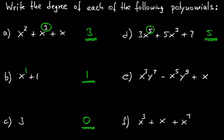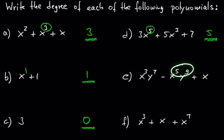In E we have x cubed times y to the 7th minus x to the 5th times y to the 9th plus x. Since 3 plus 7 is 10 and 5 plus 9 is 14, the degree of this polynomial is 14. In F we have x cubed plus x plus x to the 7th. Since 7 is the largest exponent, 7 is the degree of the entire polynomial.